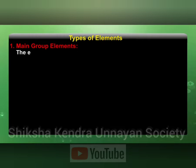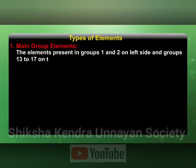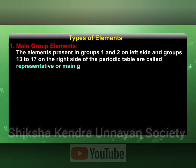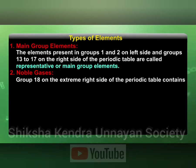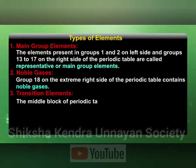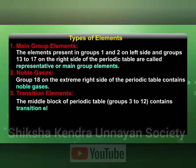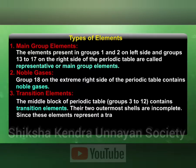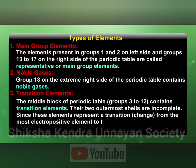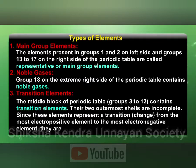Main group elements: the elements present in groups 1 and 2 on the left side and groups 13 to 17 on the right side of the periodic table are called representative elements or main group elements. Noble gases: group 18 on the extreme right side of the periodic table contains noble gases. Transition elements: the middle block of the periodic table, groups 3 to 12, contains transition elements. Since the two outermost shells are incomplete and these elements represent a transition from the most electropositive to the most electronegative elements, they are termed transition elements.